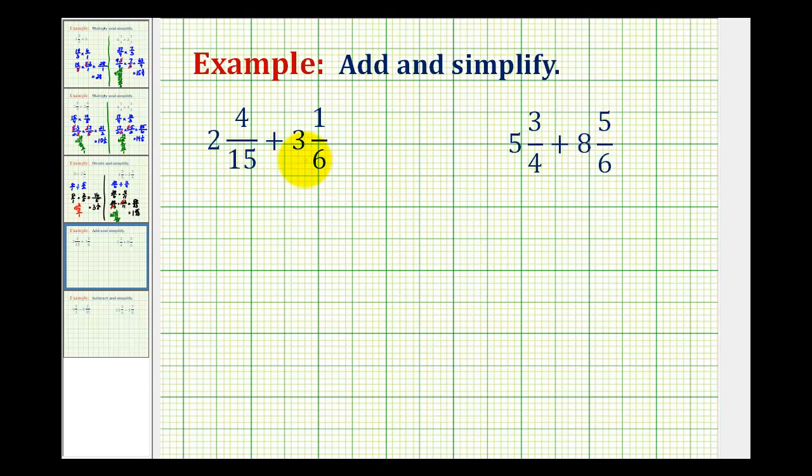So I think it's helpful to write this vertically to begin with. So we have two and four-fifteenths plus three and one-sixth. The first step in this type of problem is to obtain a common denominator, and hopefully the least common denominator, using our denominators of fifteen and six.